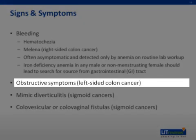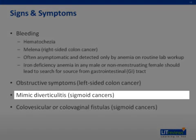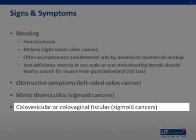Cancers located in the left colon are often obstructive in nature, with patients noticing a change in bowel habits, most often reported as increasing constipation. Although obstructive symptoms are more commonly associated with cancers of the left colon, any advanced colon cancer can cause a change in bowel habits and intestinal obstruction. Sigmoid cancers can mimic diverticulitis, presenting with pain, fever, and obstructive symptoms. Sigmoid cancers can also cause colovesical or colovaginal fistulas.